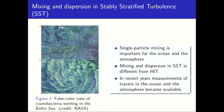Stable stratified turbulence is different from homogeneous isotropic turbulence as the stratification suppresses the vertical dispersion, but its effects on the horizontal dispersion are less certain. In recent years, measurements of tracers in the ocean and the atmosphere became available.